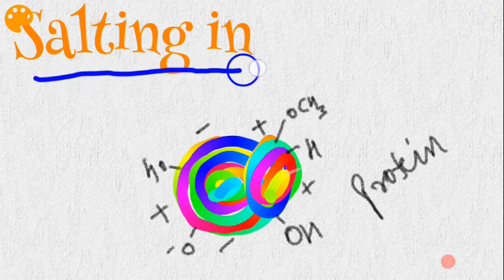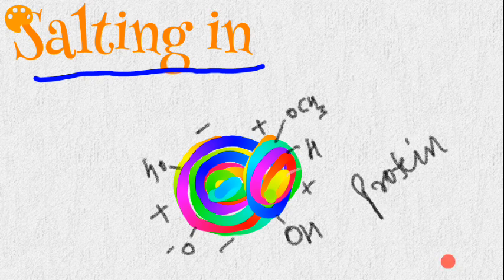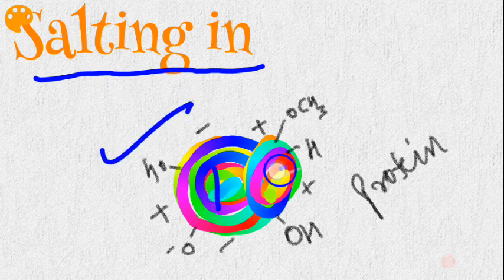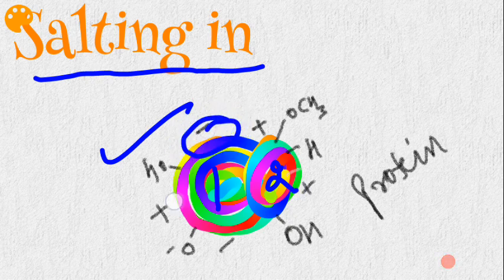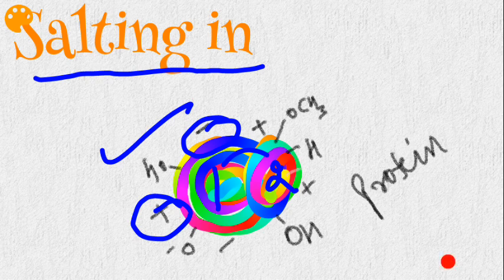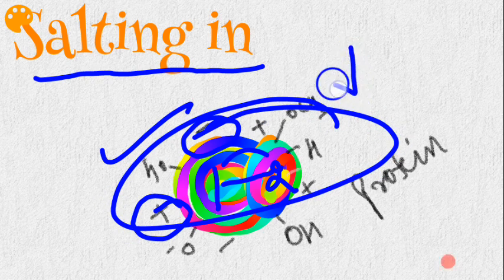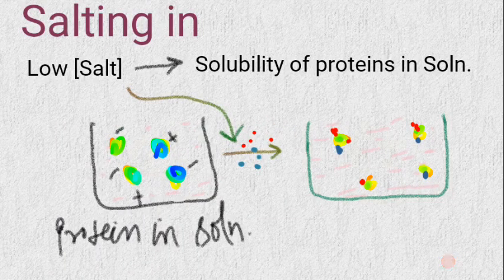Salting in is a process used to increase the solubility of protein in solution. Different amino acids carry different charges at different pH, and since amino acids constitute the protein, different types of charges are present at the protein surface. Opposite charges attract each other, forming interactions that lead to protein aggregation and precipitation, thereby reducing solubility. We use salting in to counteract this.